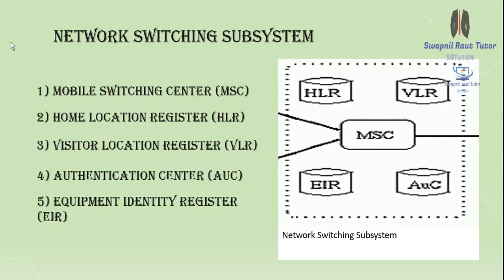The EIR, or Equipment Identity Register, stores the International Mobile Equipment Identity (IMEI) number for the entire network. It stores a database used to track handsets using IMEI numbers and prevents calls from stolen, unauthorized, or defective mobile devices. The EIR contains three types of lists: the white list (authorized/purchased phones), the gray list (phones under surveillance), and the black list (stolen phones that are reported stolen or currently locked).